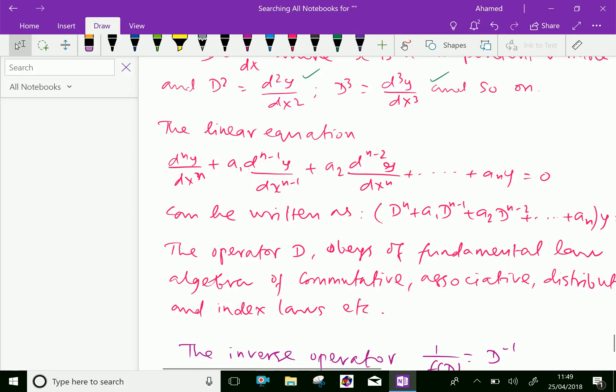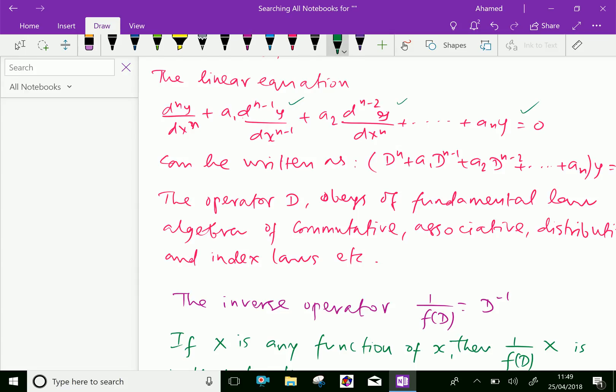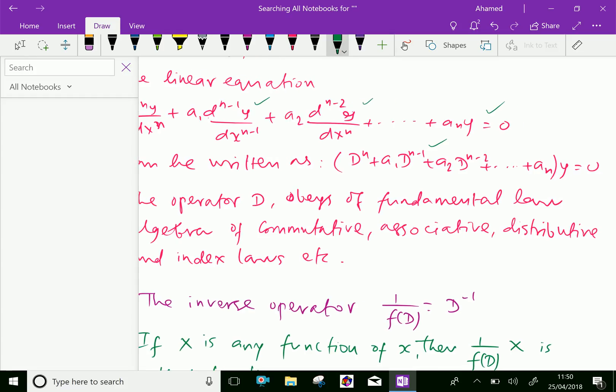The linear equation d power n y over dx power n plus a1 d power n minus 1 y over dx power n minus 1 plus a2 d power n minus 2 y over dx power n minus 2 plus dot dot dot plus an y equals 0 can be written in terms of operators as D power n plus a1 D power n minus 1 plus a2 D power n minus 2 plus dot dot dot plus an multiplied with y equals 0.